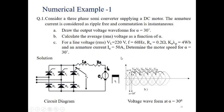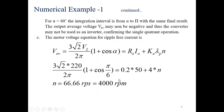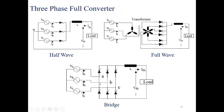Now have a look at this numerical example. This is a semi-converter where the upper part uses thyristors and the lower part uses diodes. You can see the waveform at different firing angles — the average output voltage V_dc is shown here. This leads into the analysis for fully controlled converters.